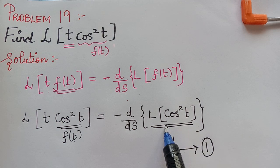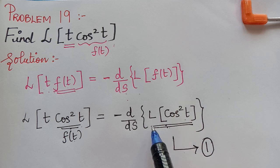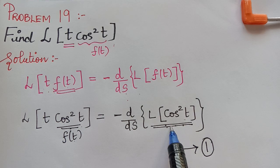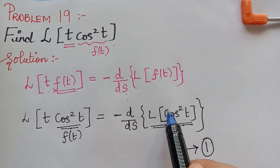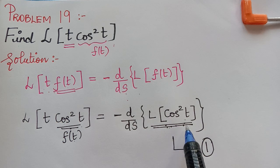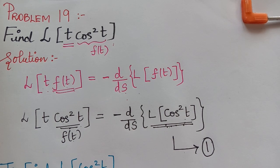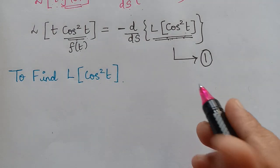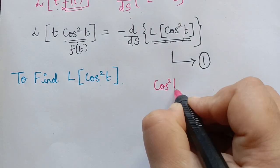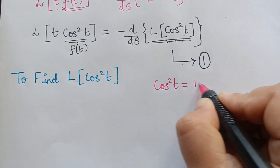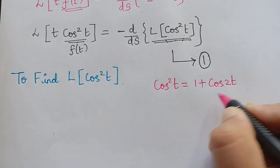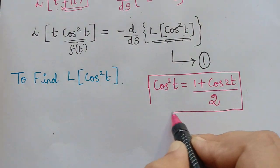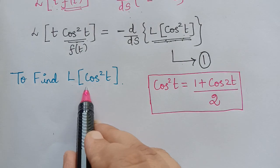I have already done video lectures on how to find the Laplace transform of a squared trigonometric term. We have to use that concept and find the Laplace transform of cos²t. In order to find the Laplace transform of cos²t, we have to use identities under trigonometry. We know that cos²t is equal to (1 + cos2t) / 2. This is the trigonometric identity we will be using.